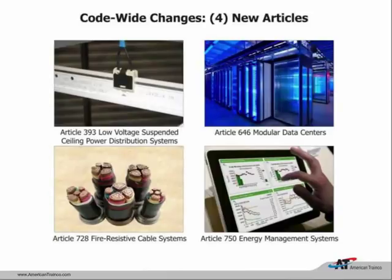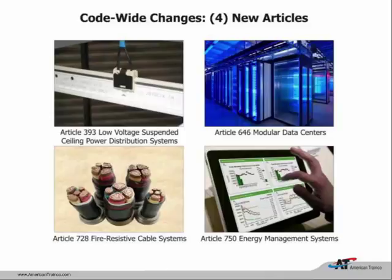There are four brand-new articles in the 2014 National Electrical Code. The first is in Chapter 3, Article 393: a suspended ceiling system that will conduct electricity, powered by a Class 2 low-voltage power system—probably around 24 volts, and it can be DC. My question is always: who's going to install this—the ceiling people, or will electricians be putting this ceiling grid up? We'll get better pictures when we get up into wiring methods.